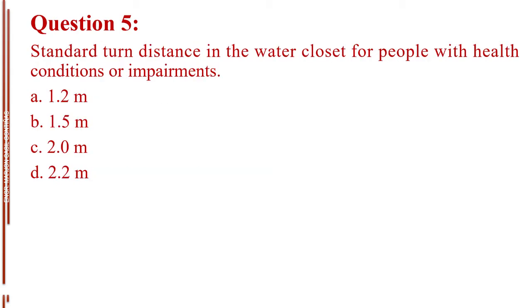Question number five. Standard turn distance in the water closet for people with health conditions or impairments. A. 1.2 meters. B. 1.5 meters. C. 2.0 meters. D. 2.2 meters. The answer is Letter B, 1.5 meters.